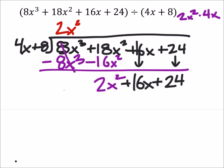Now this is all that we have left from what we started with in the dividend. Now we're going to apply that 4x plus 8 to this 2x squared plus 16x plus 24, the same way that we did that original polynomial.